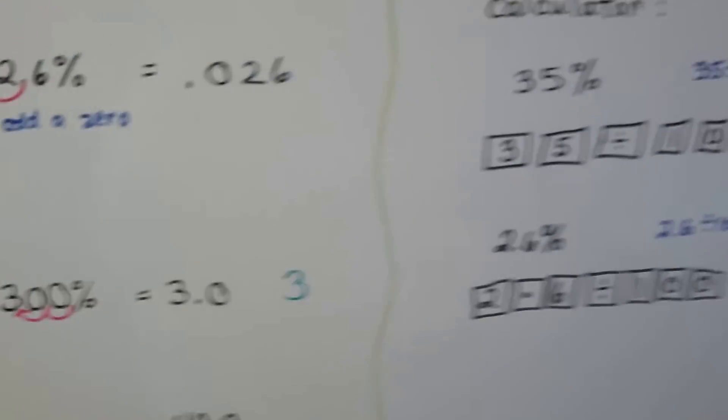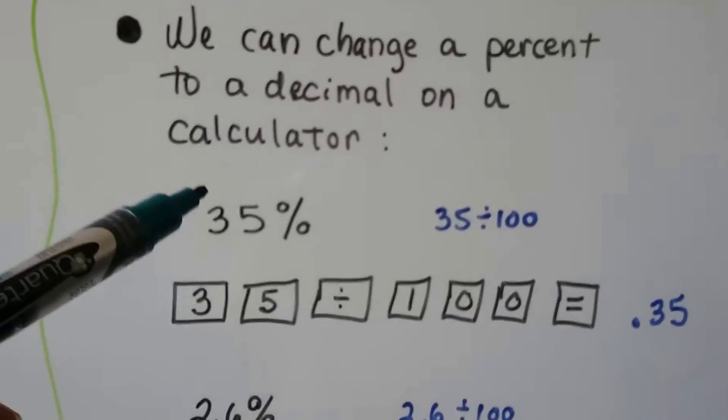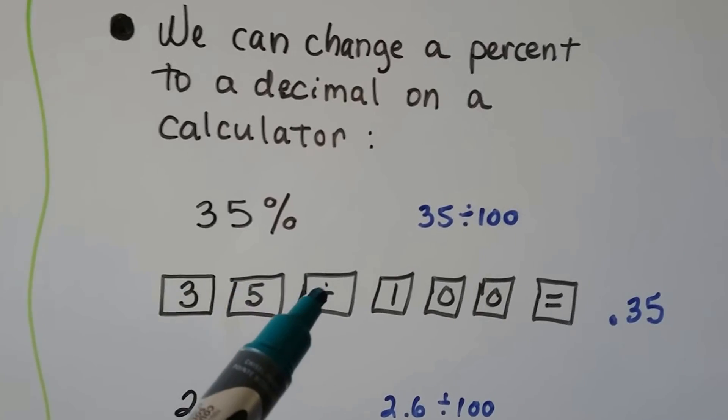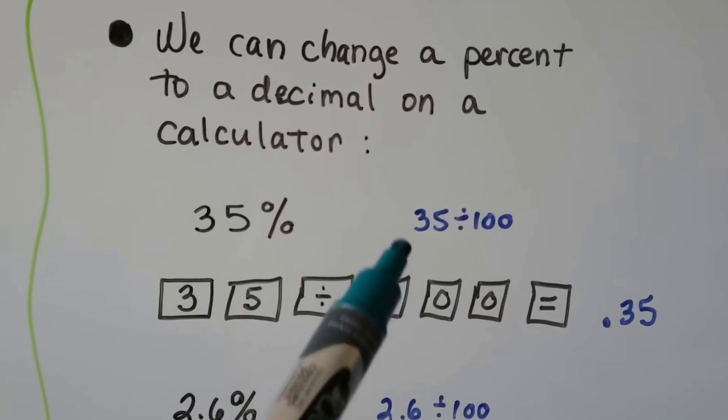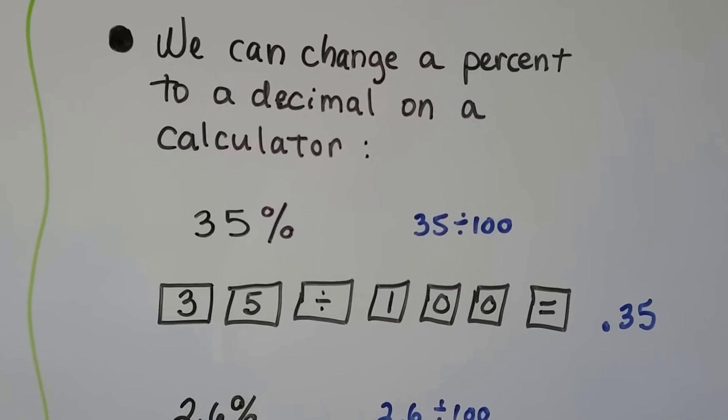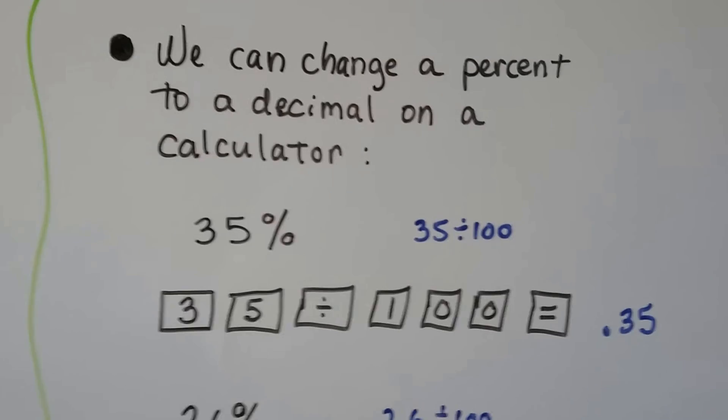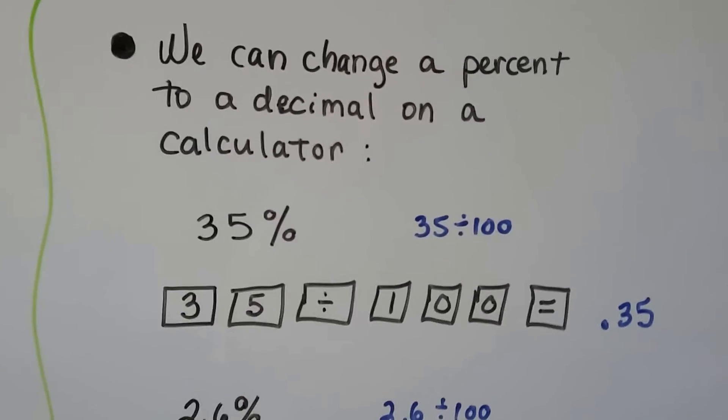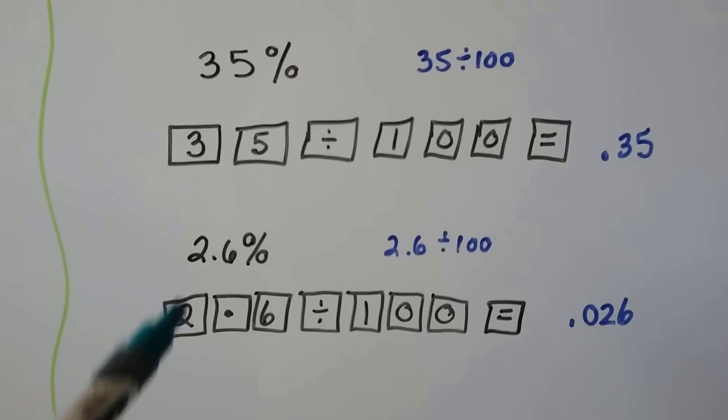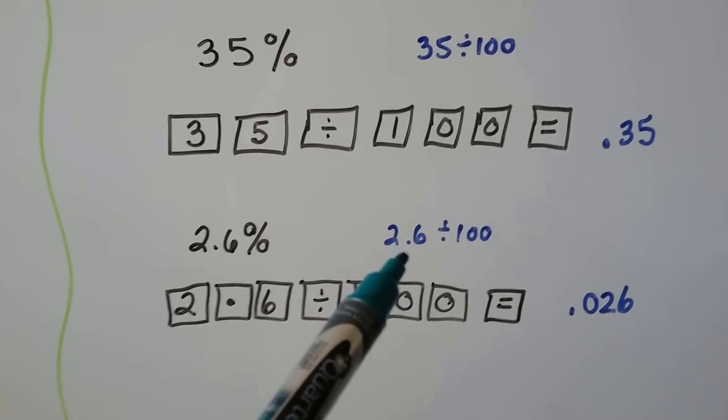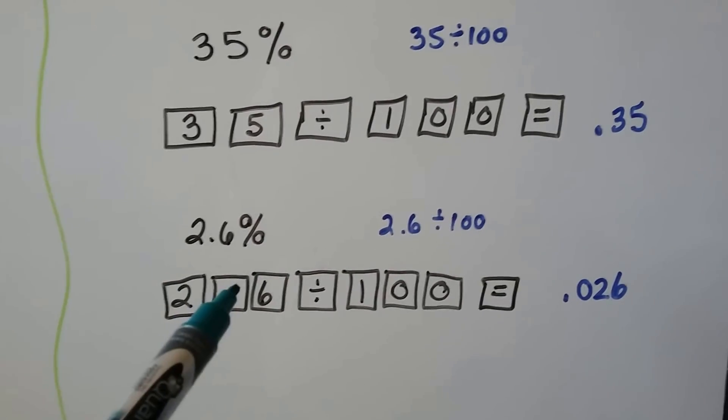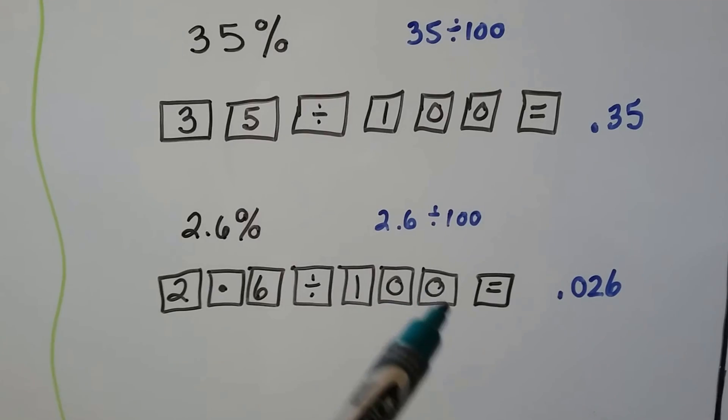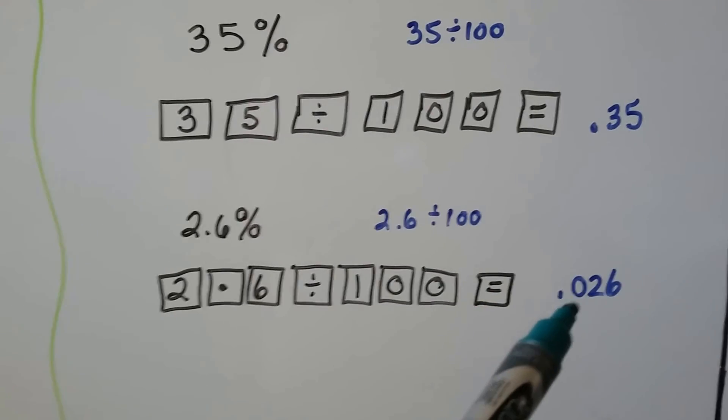And we can change a percent to a decimal on a calculator. If we have 35%, we do 3, 5 divided by sign, 1, 0, 0. 35 divided by 100. That will give us 0.35. That'll give us a decimal from the percentage. If we have 2.6%, we just divide it by 100. We can do 2, then the decimal point, then the 6. Division sign, 1, 0, 0, equals, and it'll give us 0.026.